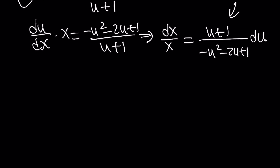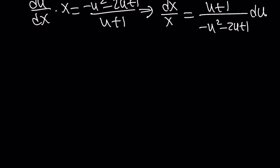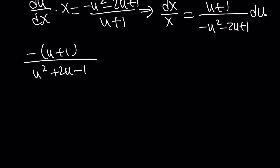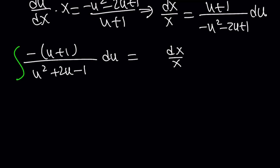So the expression with u is on one side and all the x's are on the other. Before integrating, I want to multiply both the numerator and the denominator by negative 1, so we can write this as negative(u plus 1) divided by (u² plus 2u minus 1) du, and that equals dx/x. Now I'd like to integrate both sides with respect to x, and since u is a function of x, this is doable.